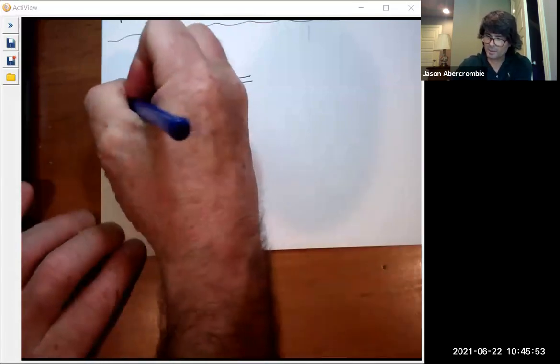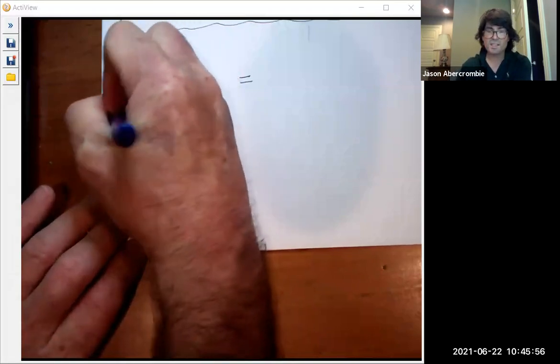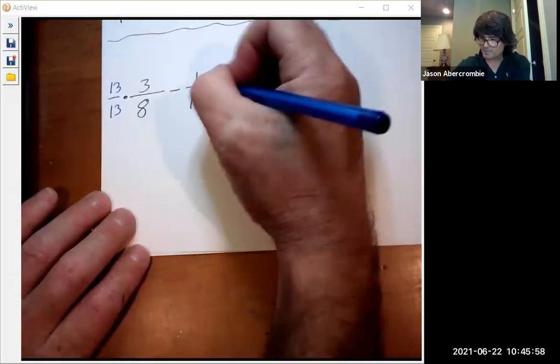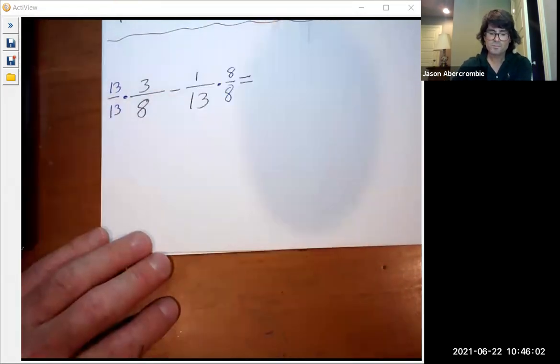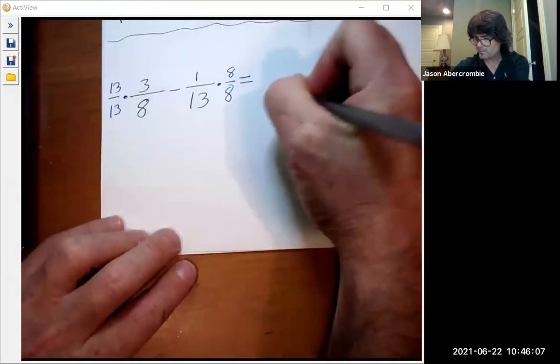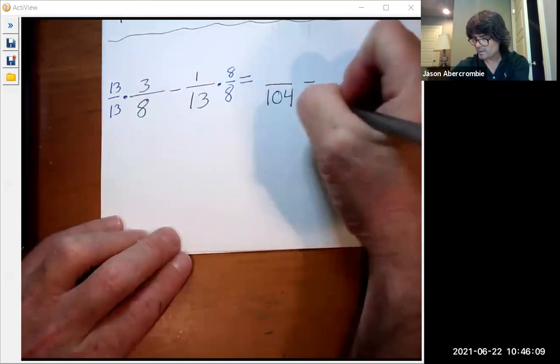So I want to multiply this by 13 over 13. I'm going to multiply this by eight over eight. And we're going to get my 104 on the bottom here and here.